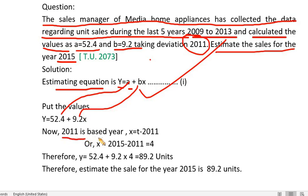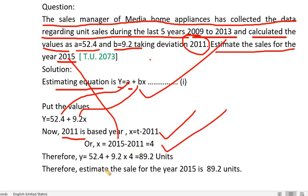The base year is 2011, so x equals t minus 2011. For 2015, x equals 4. Therefore, y equals 52.4 plus 9.2 multiplied by 4, which equals 89.2 units.